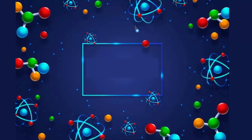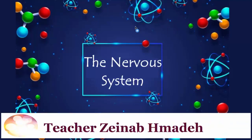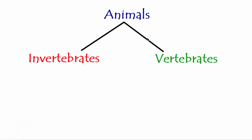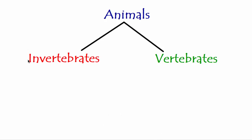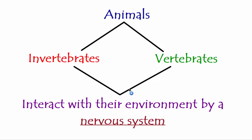Welcome to a new video. Today's video is about the nervous system. Animals are classified into two main groups: invertebrates and vertebrates. Invertebrates are all the animals that do not have a vertebral column, and there are a lot of species, while vertebrates are all the animals that have a vertebral column. Both groups interact with their environment by a nervous system, but let's discover if the nervous systems of invertebrates and vertebrates are the same, and if not, what the difference is between them.